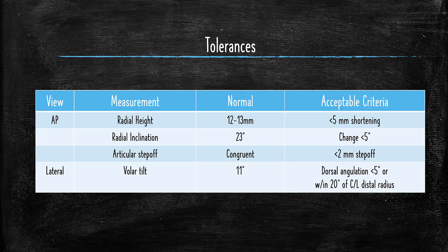So why do we need to know those? Well, if we have less than 5 millimeters of shortening of the radial height, less than 5 degrees of change in radial inclination, less than 2 millimeters of step-off, or less than 5 degrees of dorsal angulation, or if we're looking at the contralateral distal radius and it's within 20 degrees, then these are indications for non-operative management. Remember: 11 plus 12 equals 23, and all the acceptable criteria start with a 2 or a 5.